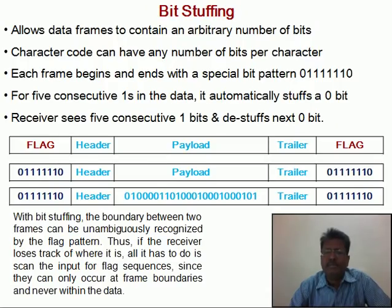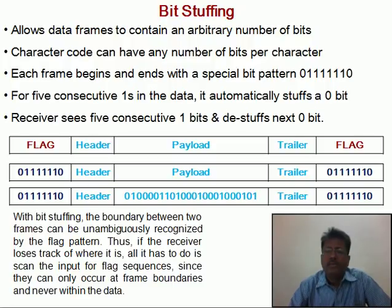The third method is bit stuffing. This method solves the problem of 8-bit character encoding of the earlier method. Bit stuffing allows data frames to contain an arbitrary number of bits, and character codes can have any number of bits per character. Because of this, this method can be used for Unicode where the number of bits per character varies from language to language. For this method, each frame begins and ends with the special bit pattern: 0 followed by 6 consecutive ones followed by 0. If 6 consecutive ones appear as part of the data, this needs to be handled.